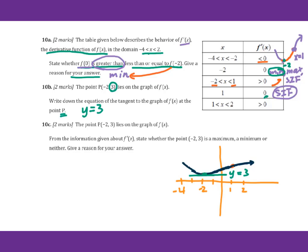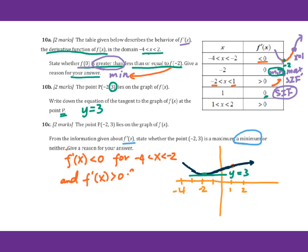For 10c, the point negative 2, 3 lies on the graph of f of x. From the information given about f prime of x, state whether the point negative 2, 3 is a maximum, minimum, or neither. Give a reason for your answer. It will be a minimum point because f prime of x is less than 0 for x between negative 4 and negative 2, and f prime of x is positive for x greater than negative 2 and up to 1. Therefore x equals negative 2 must be a minimum point.